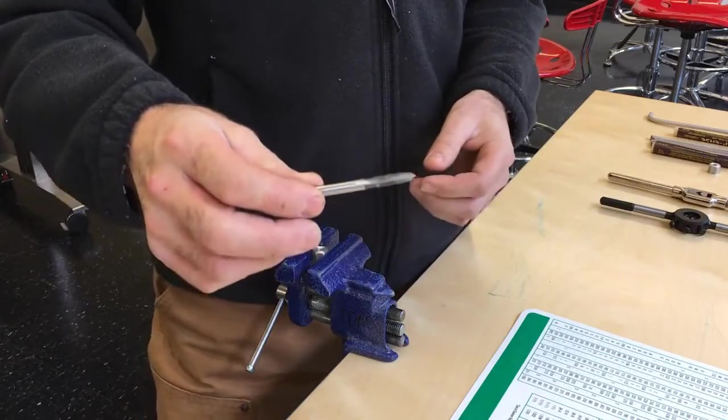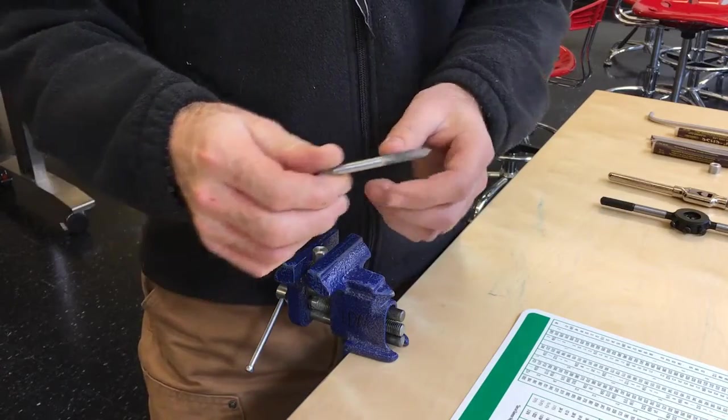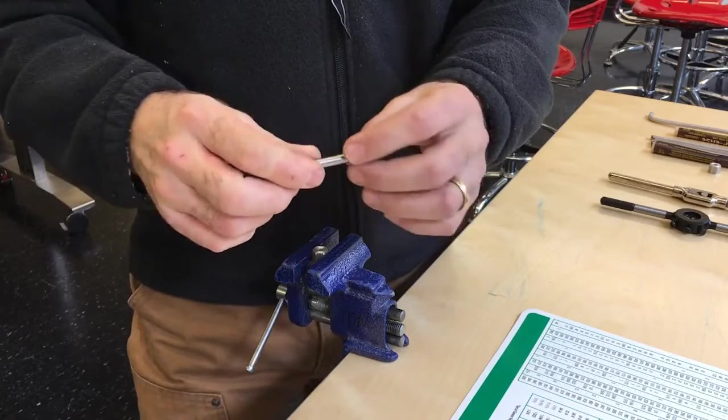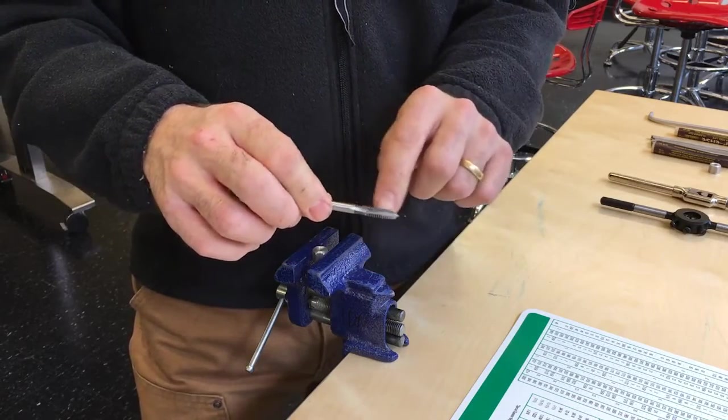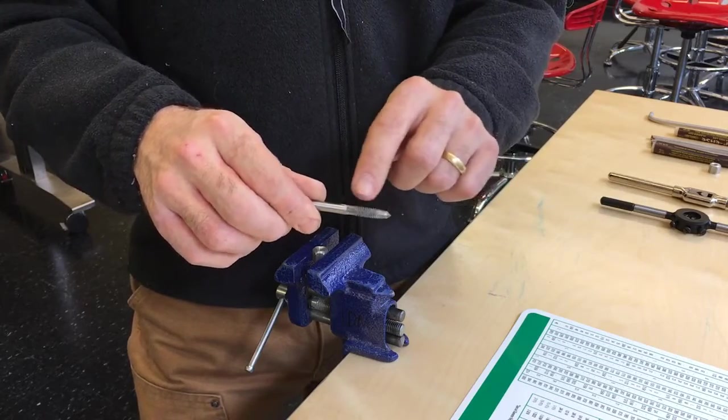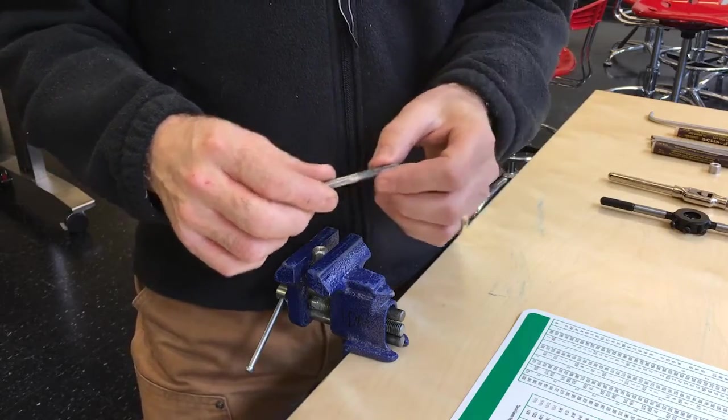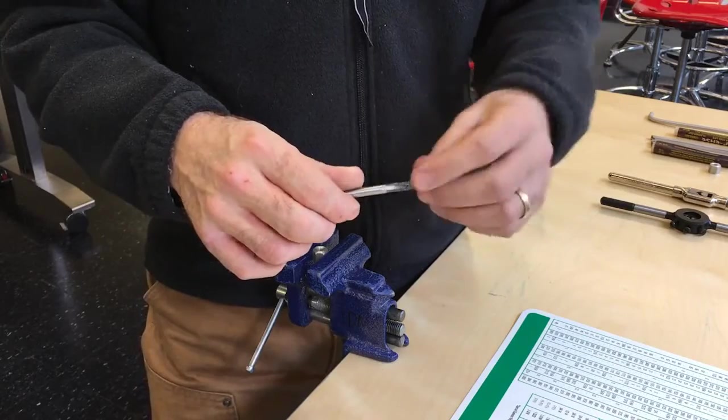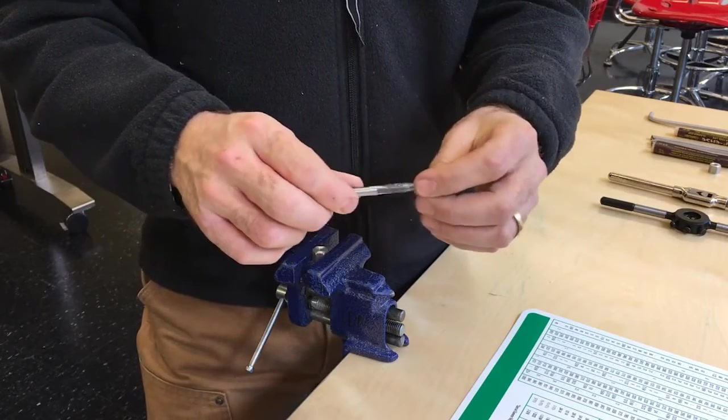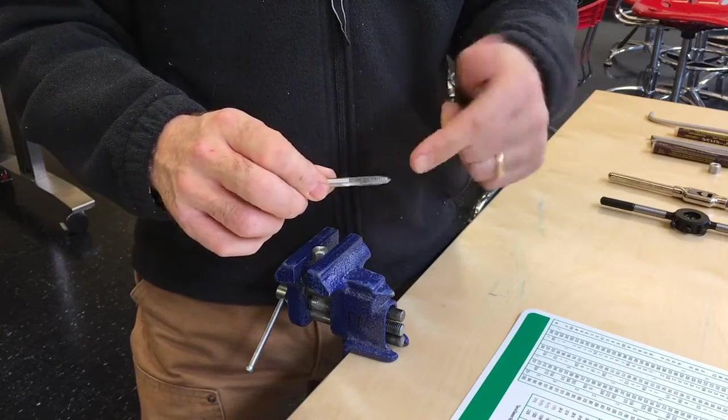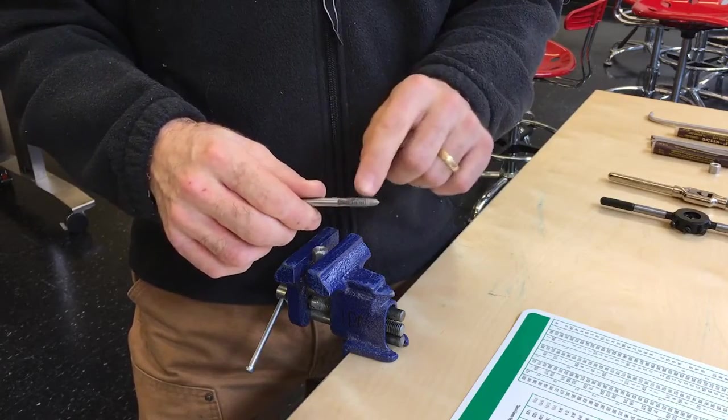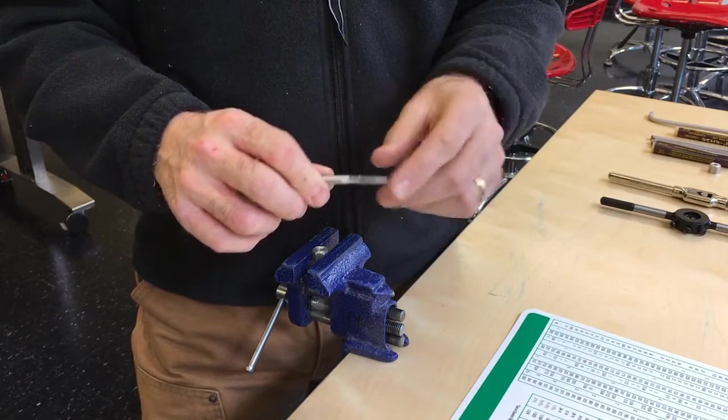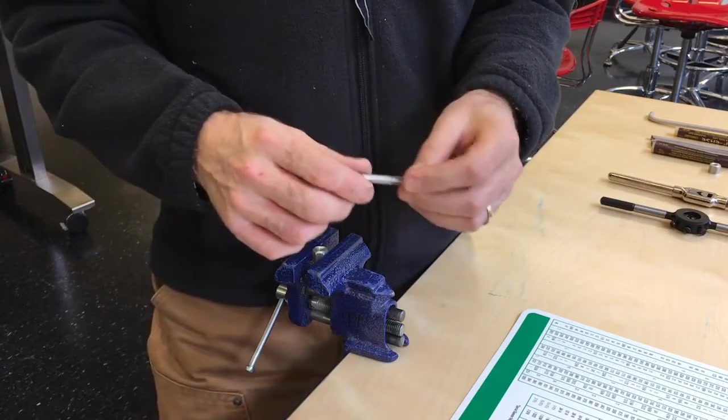This is what the tap looks like up close. It looks like the screw itself, except it tapers down, and it has, in this case, three channels to clear out the metal. As you're cutting through with the tap, you're going to be creating lots of little tiny curls of metal, and you need to put them somewhere. If you don't have those, it would jam everything up and just snap.